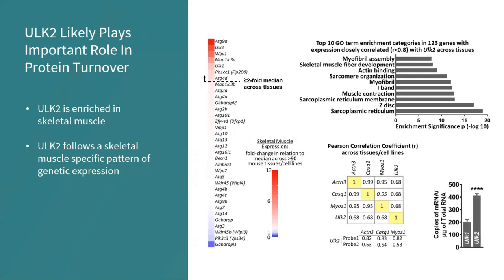ULK-2 has a better known paralog, ULK-1, that is well established in its role in autophagy. We compared mRNA copy number of ULK-1 and ULK-2 and found that ULK-2 is much more highly expressed in skeletal muscle. Looking at this data, we concluded that ULK-2 follows a genetic pattern of expression related to skeletal muscle and that skeletal muscle is particularly enriched with ULK-2. This suggests that ULK-2 likely plays an important role in protein turnover in the muscle, and we wanted to further investigate that.